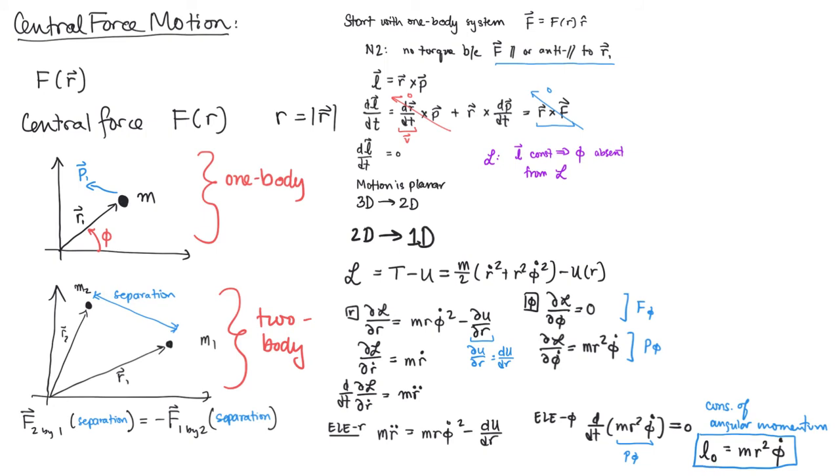So even though r may vary and phi dot may not be constant, together the product r squared phi dot will be constant. It's important to note that this angular momentum l-naught depends on the initial conditions. But once you specify the initial position and velocity, that fixes this value of l-naught and it cannot change from then on out.